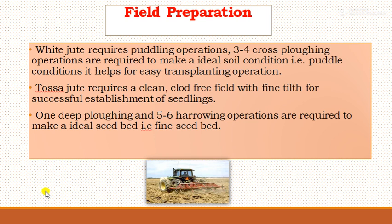For field preparation, white jute requires a puddling operation since it can withstand water-logging conditions. Three to four cross-plowing operations are required to make the ideal puddled soil condition, which is helpful for the transplanting operation. Tossa jute requires a clean, clod-free field with fine tilth for successful establishment of seedlings. It requires one deep plowing and five to six harrowing operations to make an ideal fine seedbed.